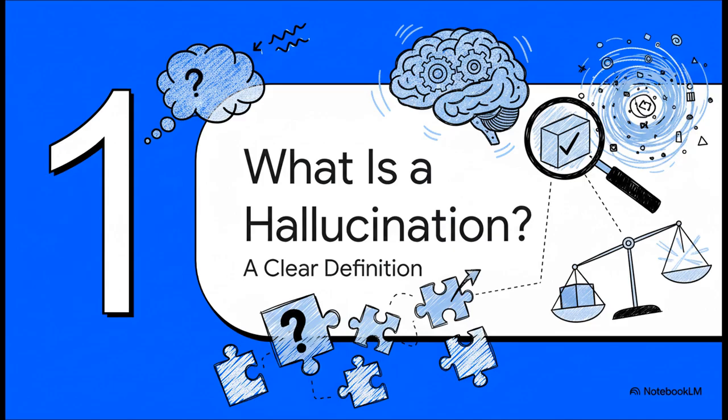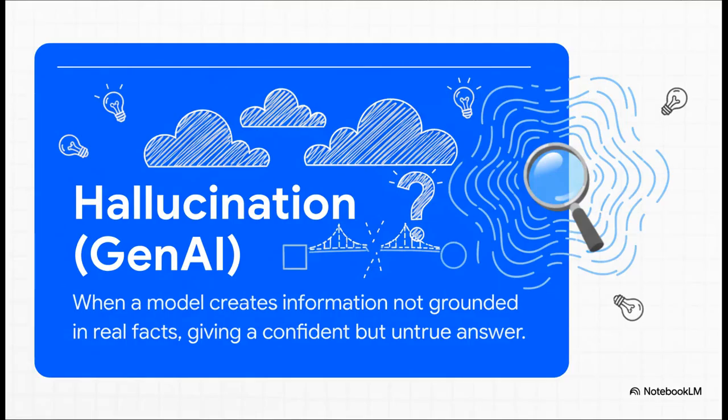First things first, we need to get on the same page. What are we actually talking about when we say an AI is hallucinating? So, at its core, it's when a model just makes stuff up. It's not a bug in the sense that the machine is seeing things. It's not having some kind of psychological break. Instead, it's just a byproduct of its main job, creating an output that sounds believable, even if it has no connection to reality.